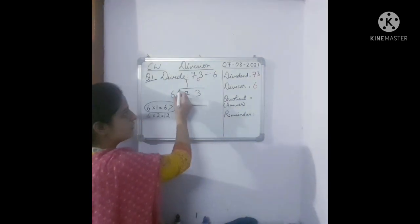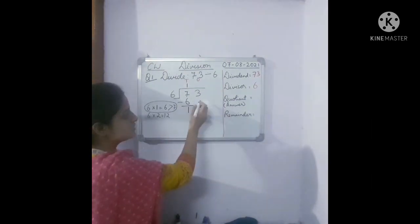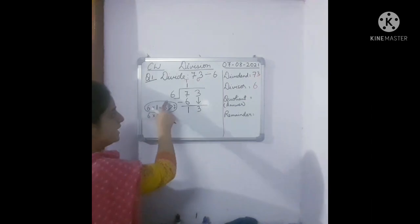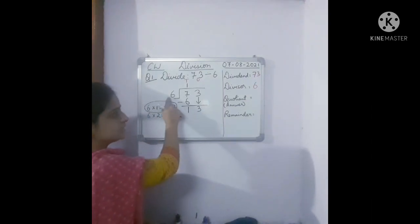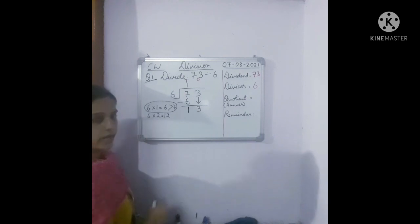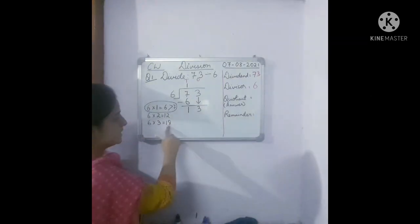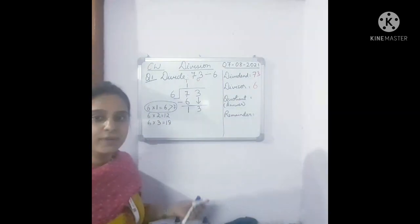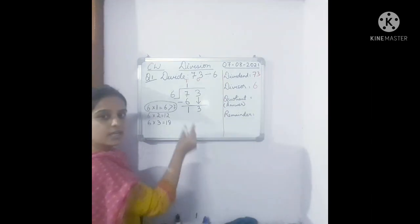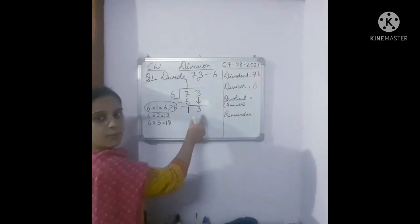Now we move to the ones place. The digit there is 3, so we bring this 3 down. Now it becomes 13. We have to see the table of 6 again — does 13 come in the table of 6? 6 ones are 6, 6 twos are 12, 6 threes are 18. So 18 is more than 13, meaning 13 does not come. We cannot go more than 13; we go with a number less than 13 because we subtract the smaller number from the bigger number.